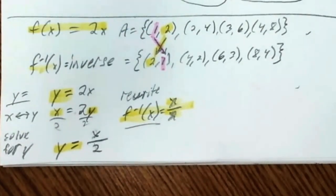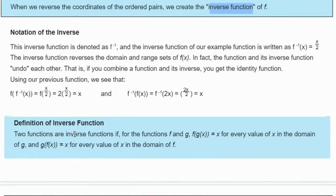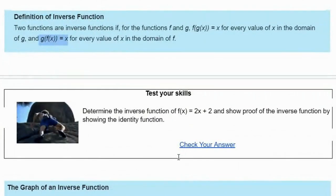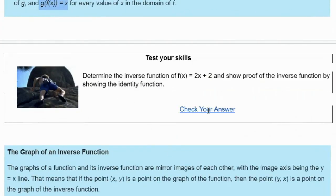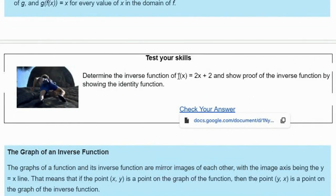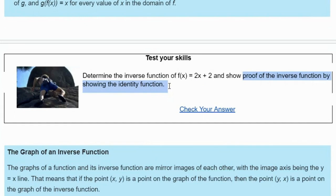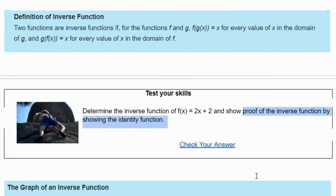Definition of inverse function: two functions f and g are inverses if f of g of x equals x for every value in the domain, and g of f of x equals x for every value in the domain. Let's work an example: determine the inverse of f(x) = 2x + 2, and then prove it by showing the identity function — that's what the definition of the inverse function is talking about.